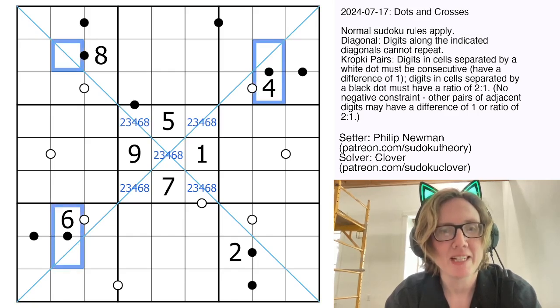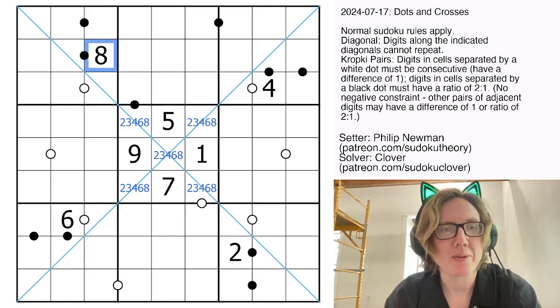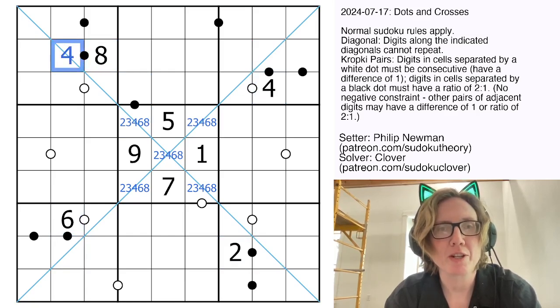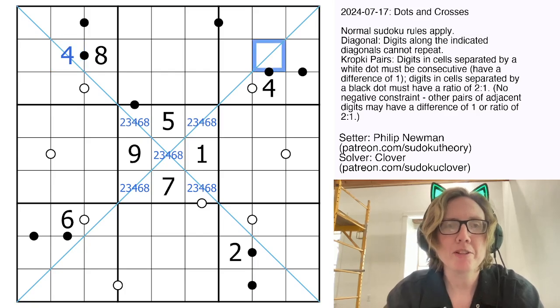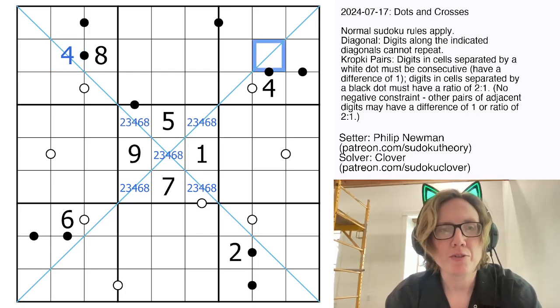And I'm going to look at some of these dots that actually have a digit placed on them already. So 8 is only in a 1 to 2 ratio with 4. 4 could be in a 1 to 2 ratio with either 2 or 8, but because there's an 8 in the row already, I'm going to have to place a 2 there.